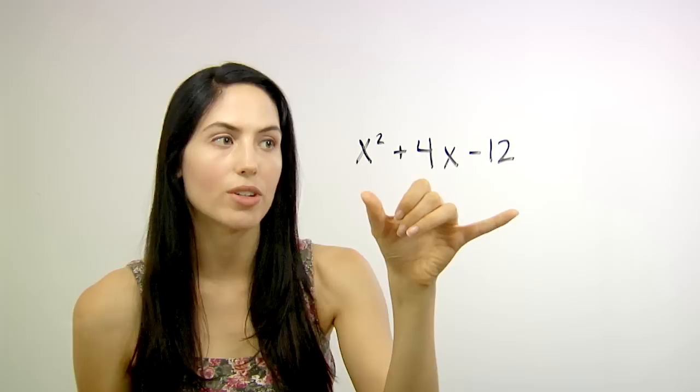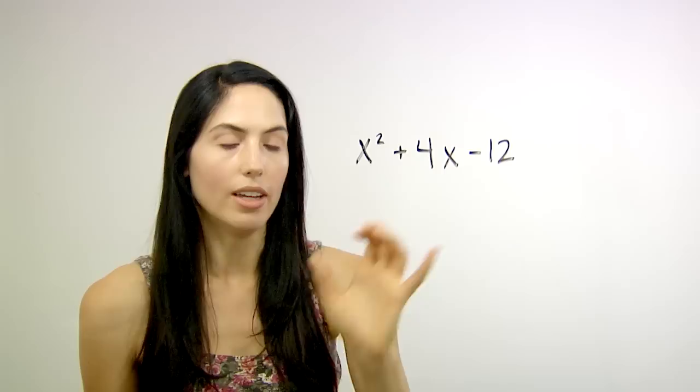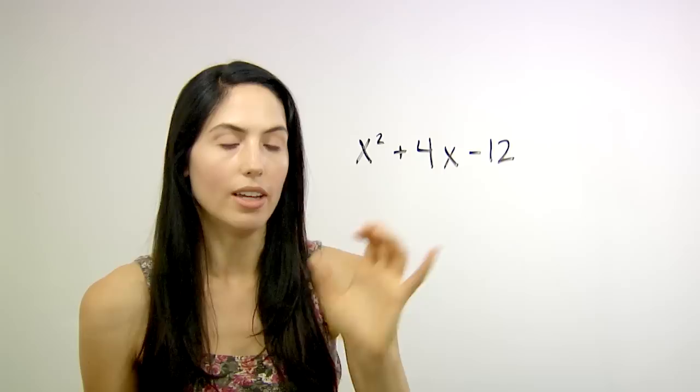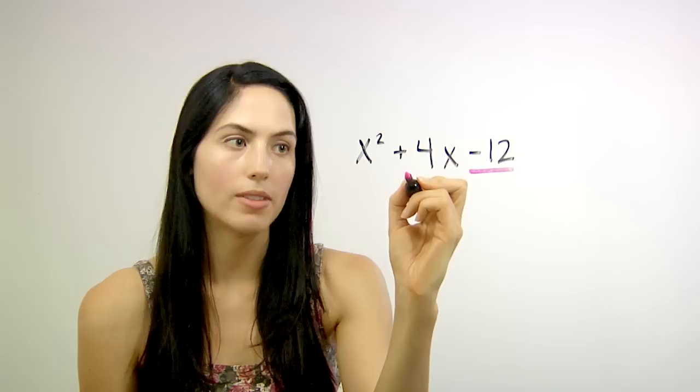Say you have a quadratic expression like this, x squared plus 4x minus 12, and you need to factor it. What you need to find are two numbers that multiply to give you this last number, negative 12, and which add to give you the second number, positive 4.